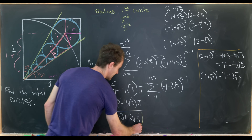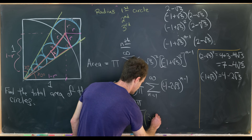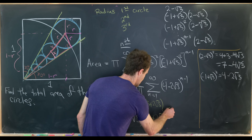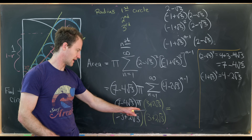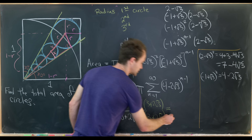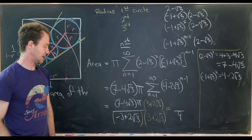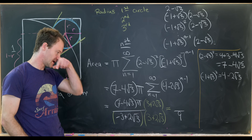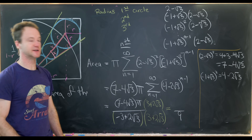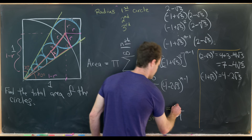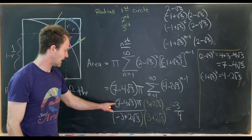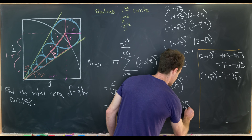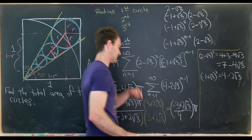We could rationalize this denominator by multiplying numerator and denominator by (3 + 2√3). In the denominator we get 4 times 3 minus 3 squared, which is 12 minus 9, giving us 9. In the numerator we get 7 times 3 = 21, minus 8 times 3 = 24, so −3, plus (14 − 12)√3 = 2√3. So the final total area is (−3 + 2√3)π over 9, and that's a good place to stop.